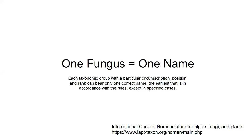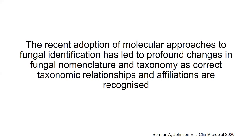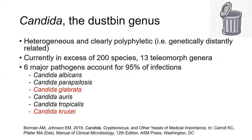Prior to 2011, the telomorph name — the sexual form — was given precedence. But following the 2011 convention, the rule is now that every taxonomic group can only bear one correct name, which is the earliest name. The problem is: one fungus, which name do you use? Especially with the recent adoption of molecular approaches, which has led to profound shifts in fungal nomenclature and taxonomy. So let's briefly look at how this is going to affect Candida.